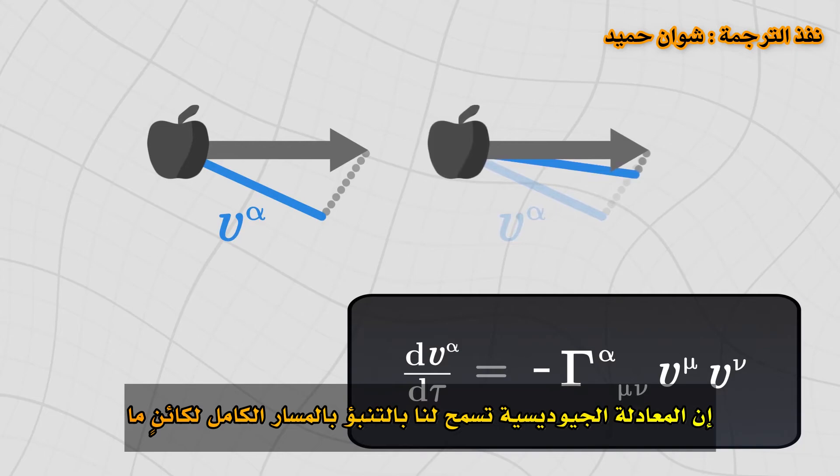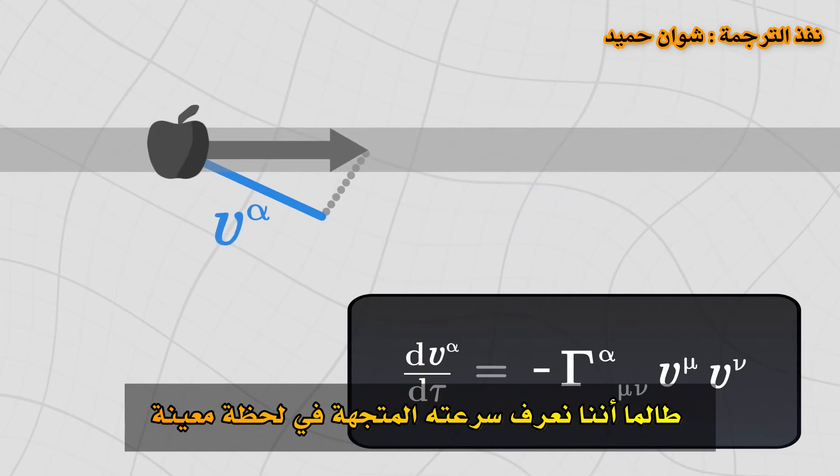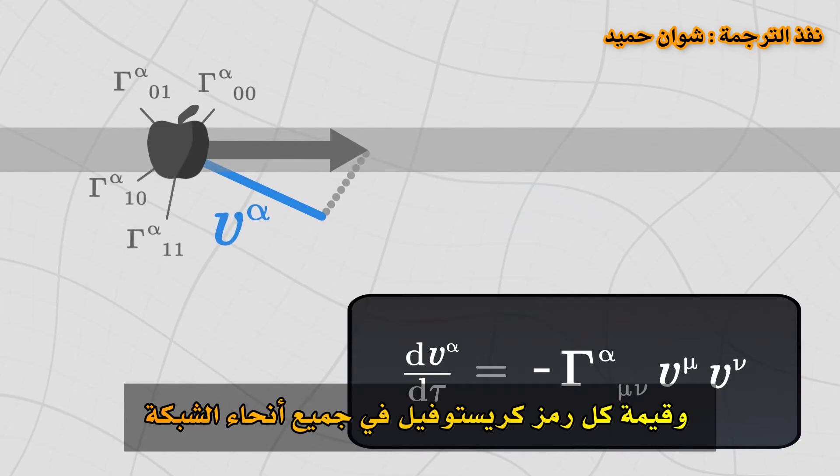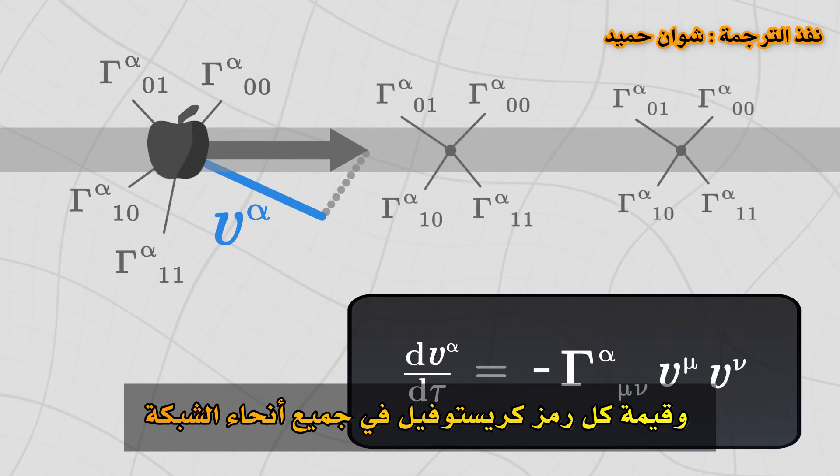The geodesic equation thus allows us to predict the whole trajectory of an object, as long as we know its velocity at a given moment, and the value of each Christoffel symbol all throughout the grid.